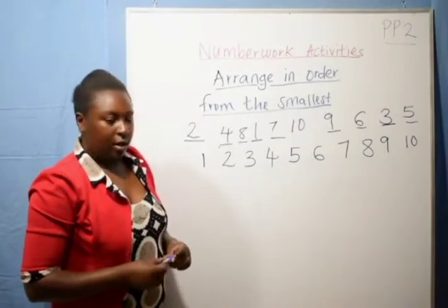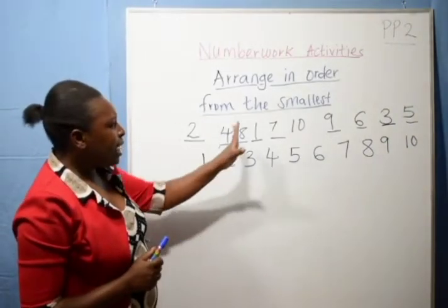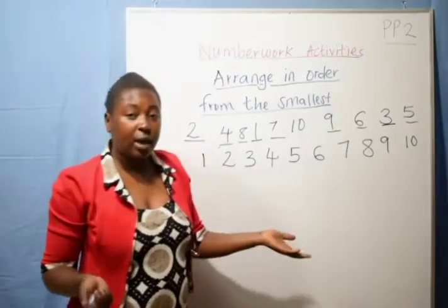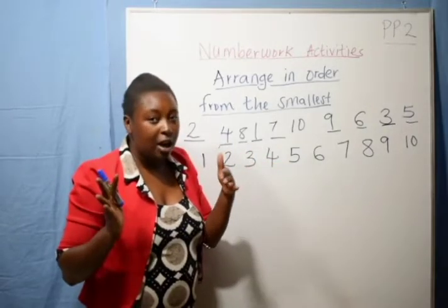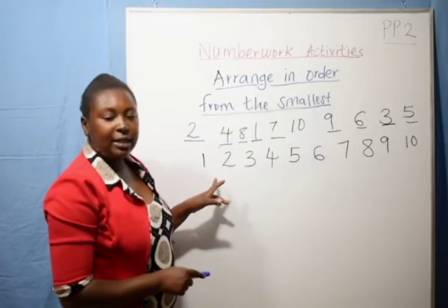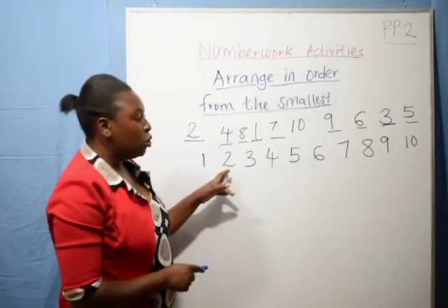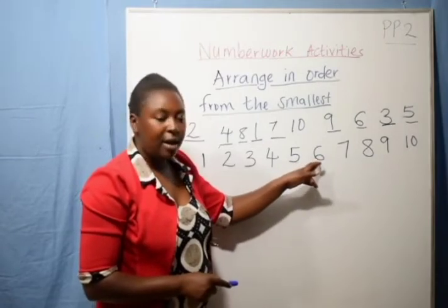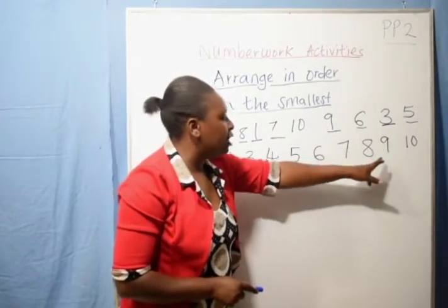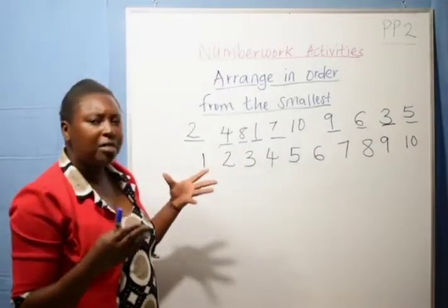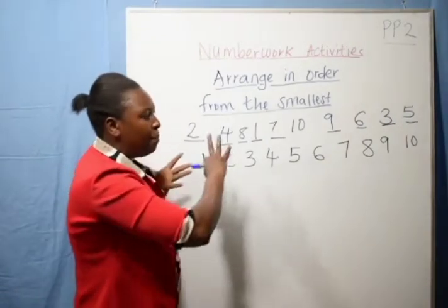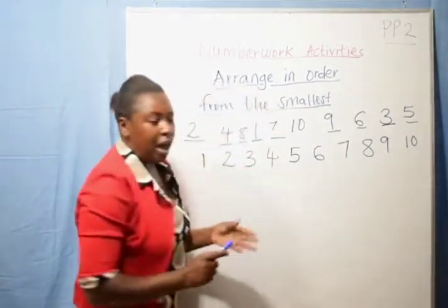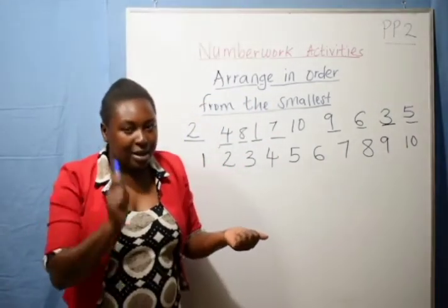Boys and girls, can you put your eyes here? Let us see — this is how we arrange the numbers. They were disarranged as: two, four, eight, one, seven, ten, nine, six, three, and five. But we read numbers consecutively as they follow one another: one comes before two, two comes before three, three before four, four before five, five before six, six before seven, seven before eight, eight before nine, and nine before ten. So we have arranged them: one, two, three, four, five, six, seven, eight, nine, ten.